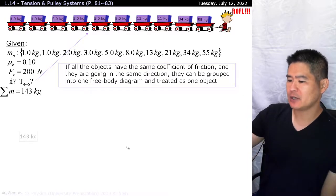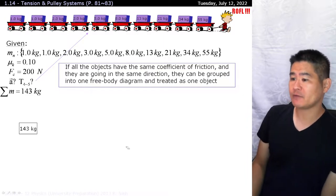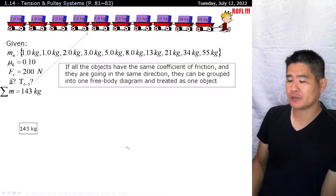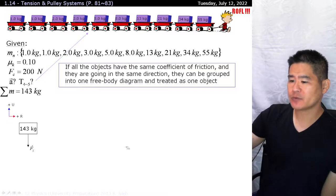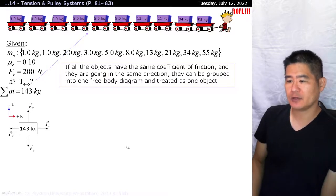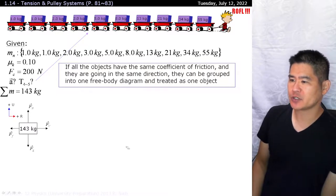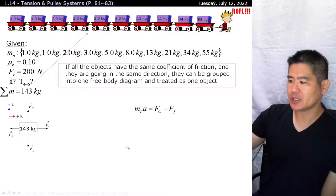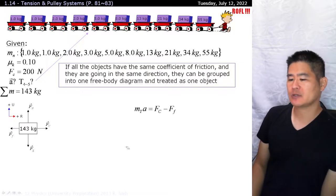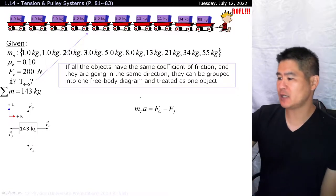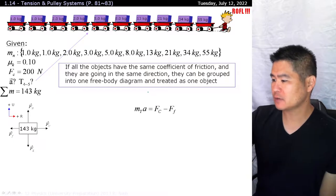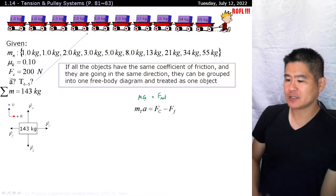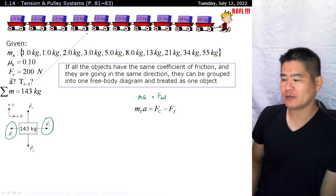So if all the objects share the same coefficient of friction and they're all traveling in the same exact direction, then why not just box them in as one big fat object? So we're going to add all these masses together. Calvin is pulling it forward with a force of 200 newtons, the force of friction opposes it. Therefore, you can group them all together. As one big fat object, it's fairly quick to calculate everything else out.